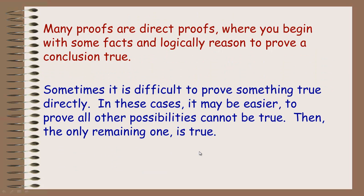Many proofs are called direct proofs, where you begin with some facts and logically reason to prove a conclusion true. Sometimes it is difficult to prove something true directly, and this is where indirect proofs are often used — especially when you're trying to prove things are not equal. In these cases, it might be easier to prove all other possibilities cannot be true, so the remaining one must be true.